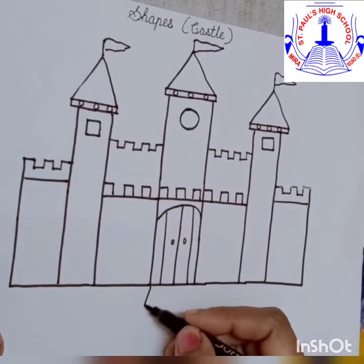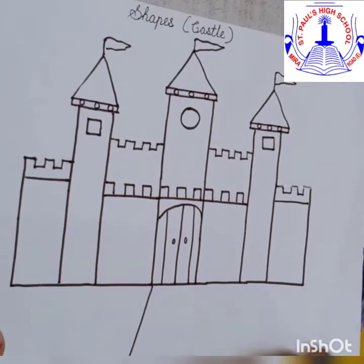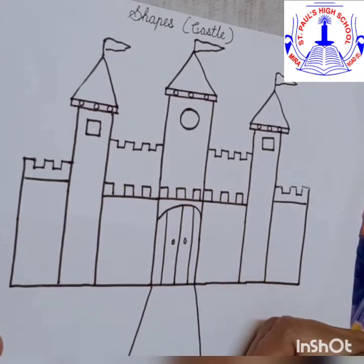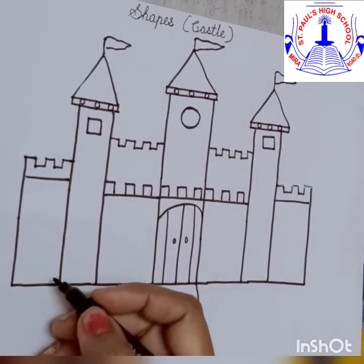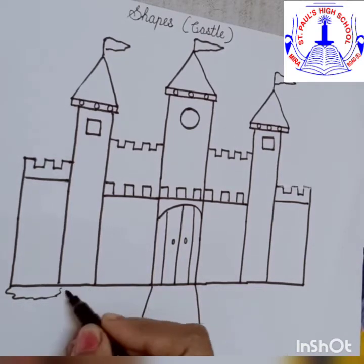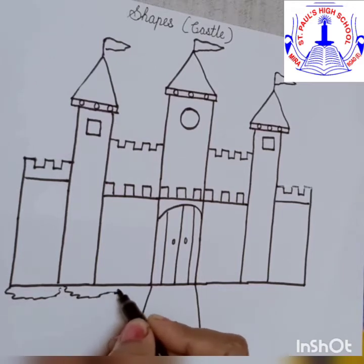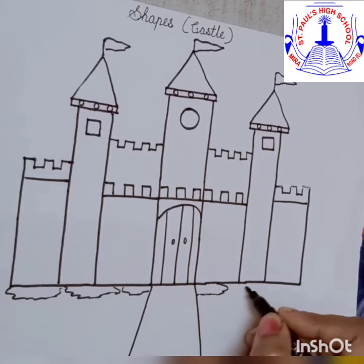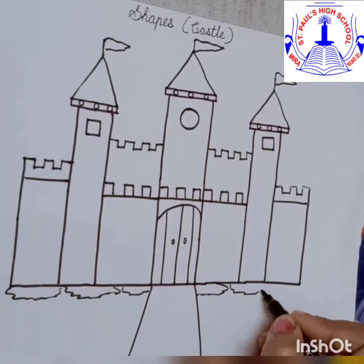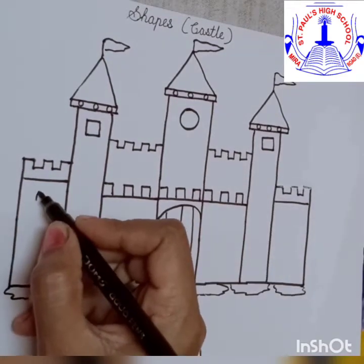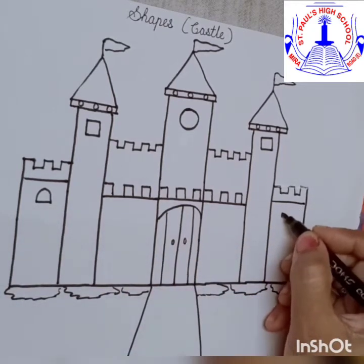Let's draw the road. Just drag your pencil down to the remaining space. And here we are going to give greenery outside near the castle with the help of some grass. Here are a few more small windows.